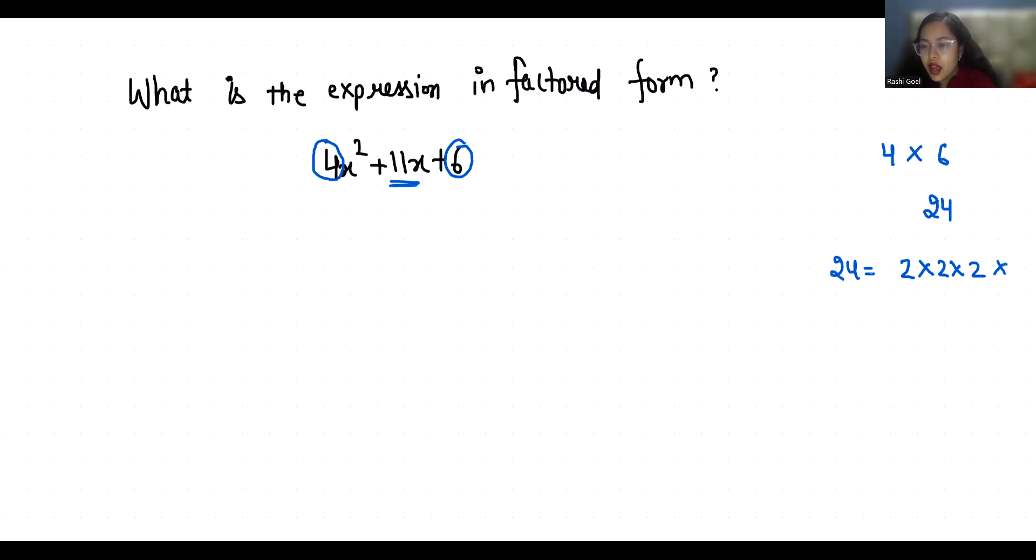Now we have to break it in 11. So 2 times 2 is 4, 2 times 3 is 6. So 6 plus 4 is 10. That doesn't give us 11. So we cannot take 4 plus 6.